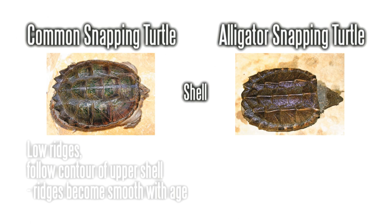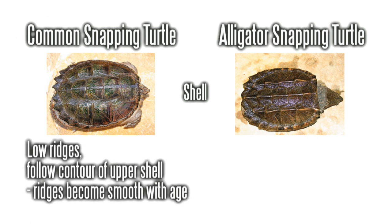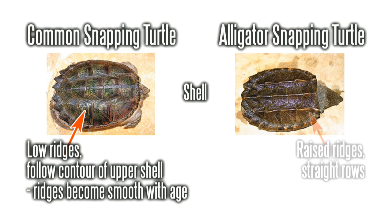Common snapping turtles have low ridges that follow the contours of their shells and smooth out as they grow older. Alligator snapping turtles tend to have rows of spiky raised keels.